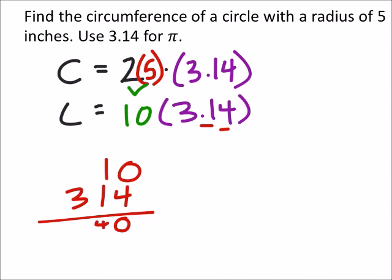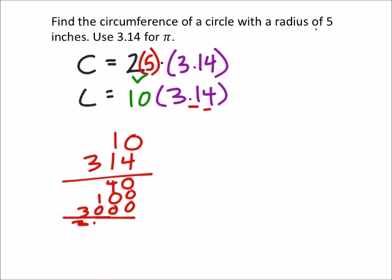In the tens place, 1 times 0 is 0, 1 times 1 is 1. In the hundreds place, 3 times 0 is 0, 3 times 1 is 3. This ends up being 3140.